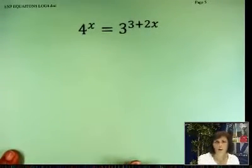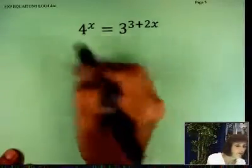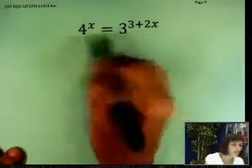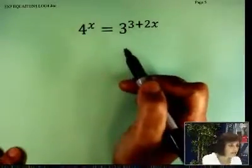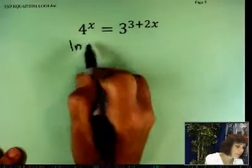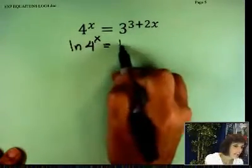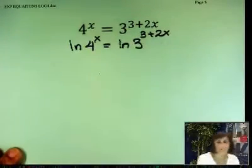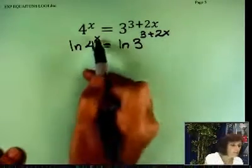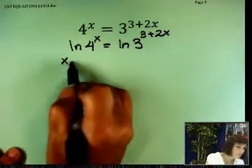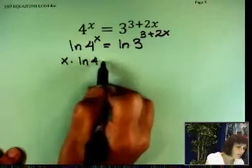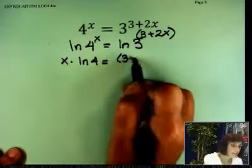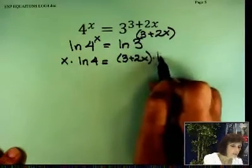Let's look at this. I'm going to break this down, or you don't have to break it down. 4 and 3, there's no way they can match. So I'm going to take ln of both sides. ln of 4 to the x, ln of 3 to the 3 plus 2x. What does that mean? You can carry the x up front. x times ln of 4. You can put that 3 plus 2x up front. 3 plus 2x times ln of 3.